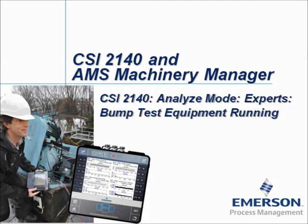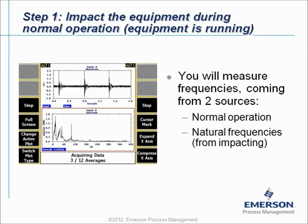Before I show you how to use the CSI 2140 Machinery Health Analyzer, I will briefly explain the theory. Negative Averaging is a two-step process. In step one, when the machine is running, you have to impact it. Because you impact the machine when it is running, you will measure two kinds of frequencies: frequencies from normal operation like imbalance, misalignment, and looseness, and also the natural frequencies coming from impacting the installation.